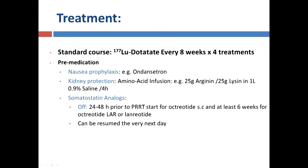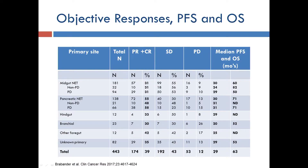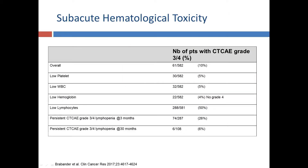The treatment is given every eight weeks for four treatments. Patients also should receive nausea prevention. As far as side effects, the main concern is low blood counts, just like chemotherapy. The rate of severe decrease in blood counts is quite low, less than 10%, and it almost always recovers within two or three months.